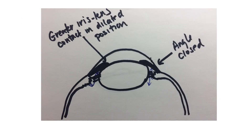In an eye starting out with a narrow angle, acute angle closure is triggered by a dilated pupil. In a dilated pupil, the peripheral iris becomes thicker, taking up more angle space. There is also greater contact between the iris and the lens — the iris can get stuck to the lens, blocking the natural aqueous humor pathway. Aqueous humor volume increases behind the iris and eventually pushes the peripheral iris forward, completely closing the angle.